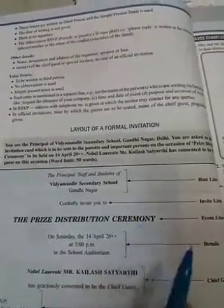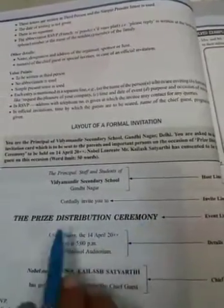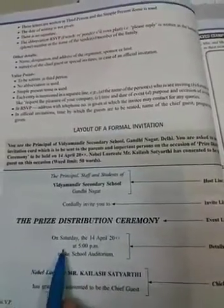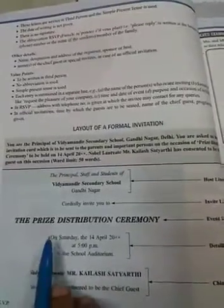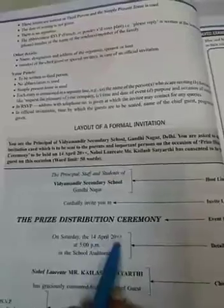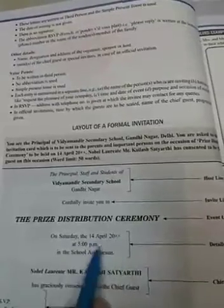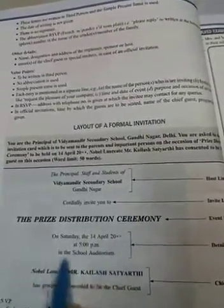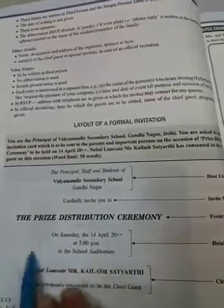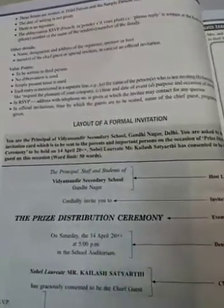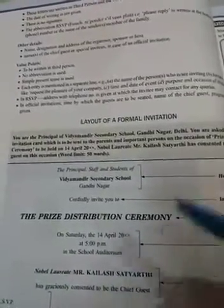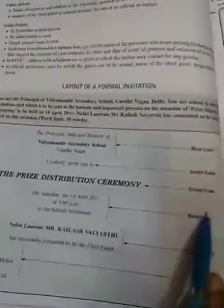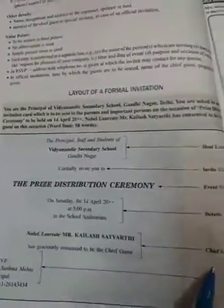Now the invite line: 'cordially invites you.' The occasion is written in capital, broad letters: 'The Prize Distribution Ceremony.' Then the event line with details — on which date, where, and time: on Saturday the 14th of April, with timing, in the school auditorium as the venue. We have to write the proper venue in the invitation.